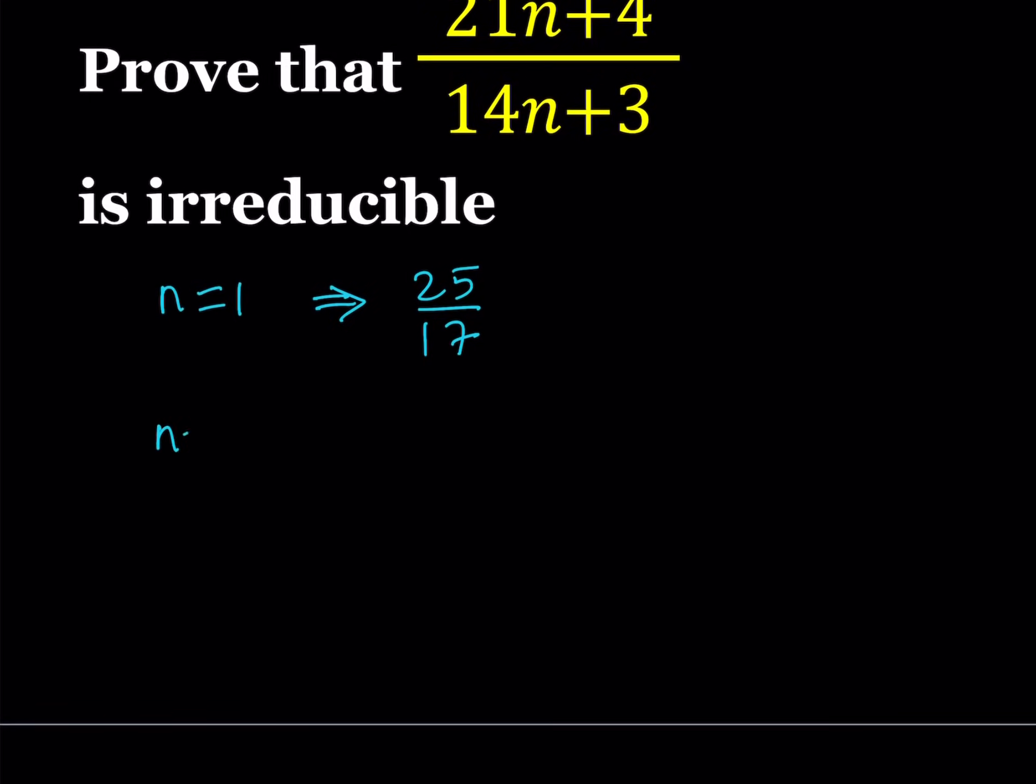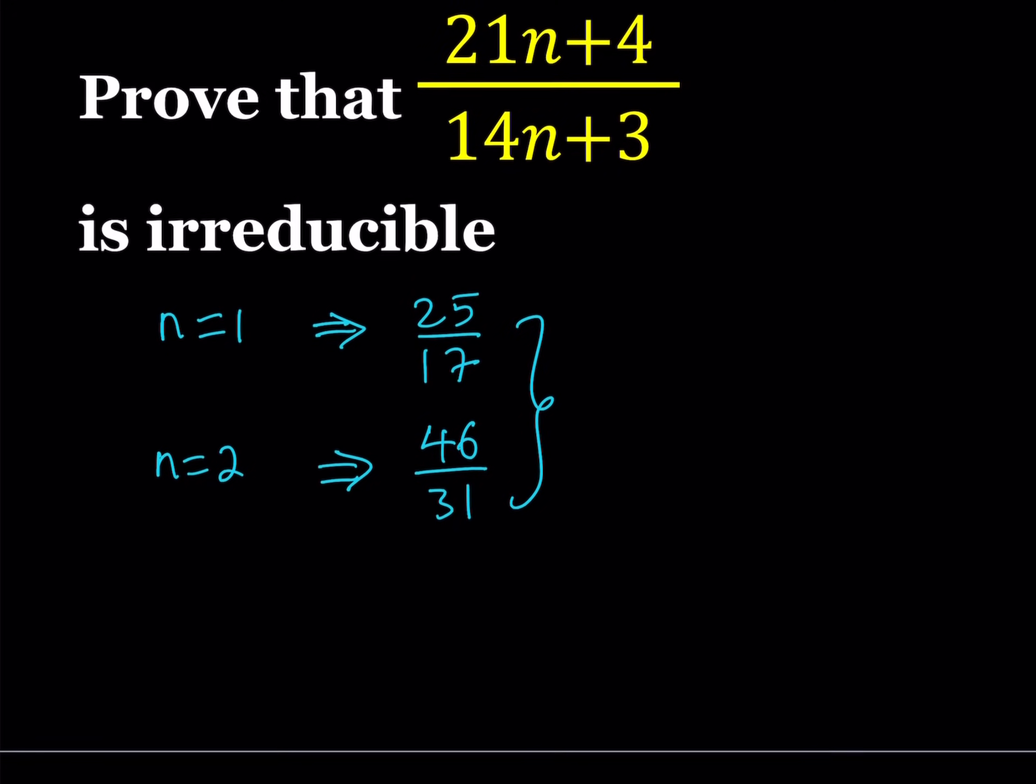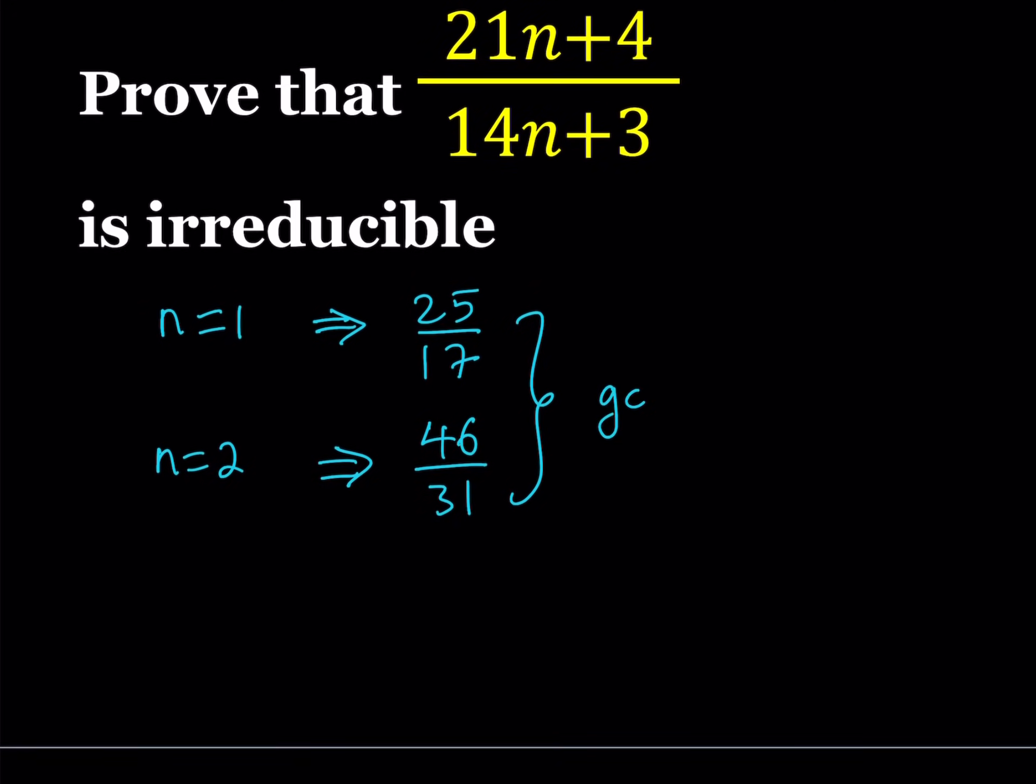Let's test another value, for example n equals 2. If n is equal to 2, I'm getting 46 divided by 31. Again, these two numbers have no common factors besides 1. In other words, if a fraction is irreducible, we can safely say that the greatest common divisor of the numerator and the denominator is 1.